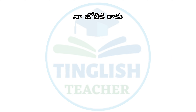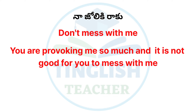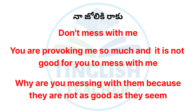Now the sixth one is: Naa jolikki raakku — Don't mess with me. Don't mess with me. For example: You are provoking me so much and it is not good for you to mess with me.